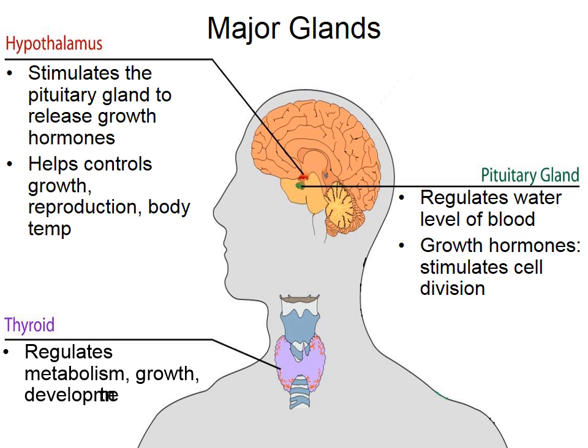The pituitary gland has more than one job. It regulates water levels in the blood — if blood becomes too thick, it releases hormones to control water content. It also releases growth hormones that stimulate cell division and cause cells to physically grow larger, important during puberty and into adulthood. Moving to the thyroid in the throat area: it helps with metabolism and digestion via the T3 and T4 hormones. Calcitonin lowers calcium in the blood when levels are too high, and parathyroid hormone raises calcium when levels are too low.